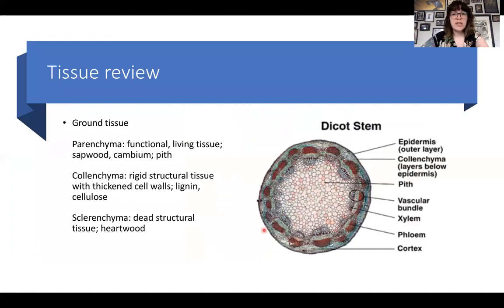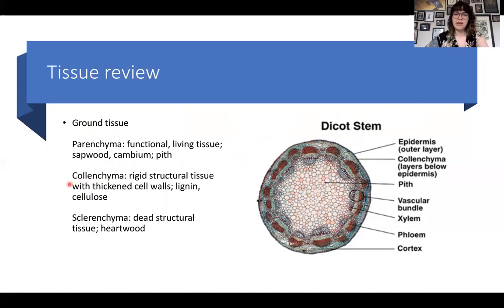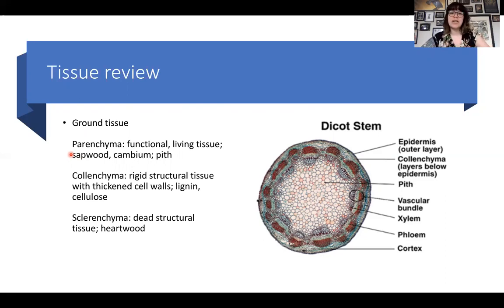Looking at this cross section, we have ground tissue, of which there are three types: parenchyma, colenchyma, and sclerenchyma. I don't think we've talked about sclerenchyma or colenchyma before, so I'm defining them now as types of ground tissue. Parenchyma we talked about last time — this is our functional living tissue, generally photosynthetic, active, vascularized, and dividing. That includes the sapwood, the cambium if we're talking about something wooden, and the pith.